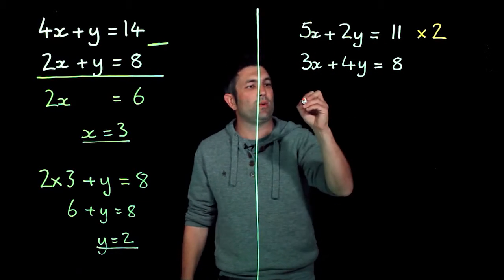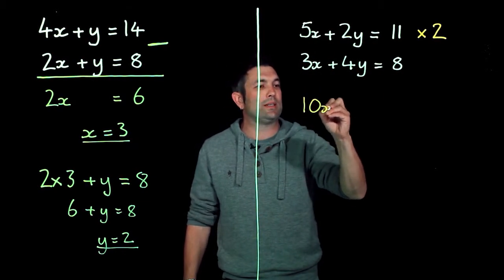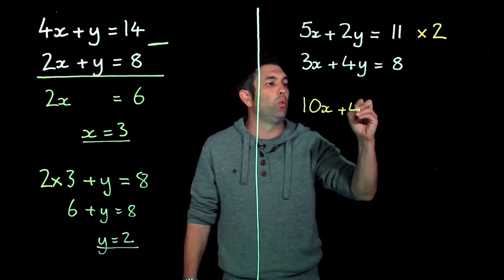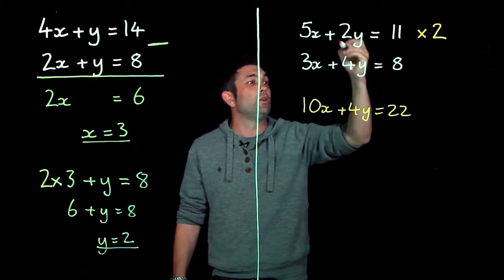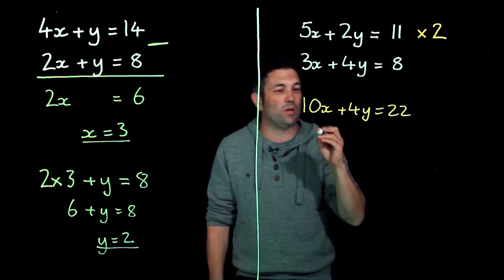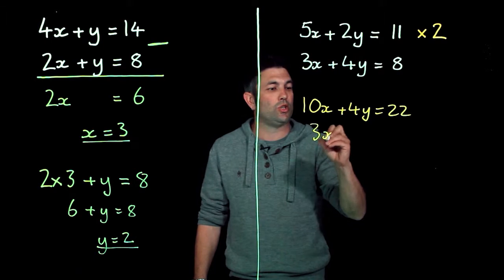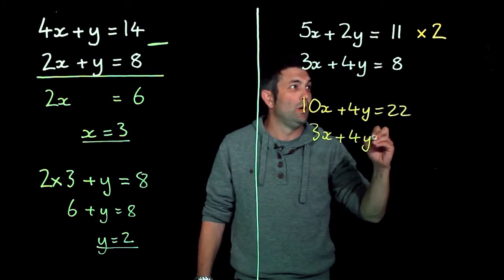So if I multiply that by 2, I'm going to multiply everything by 2, so I get 10x plus 4y equals 22. You'll notice I've multiplied the 5x by 2, the 2y by 2, and the 11 by 2. The other one I don't want to change, so there we go.